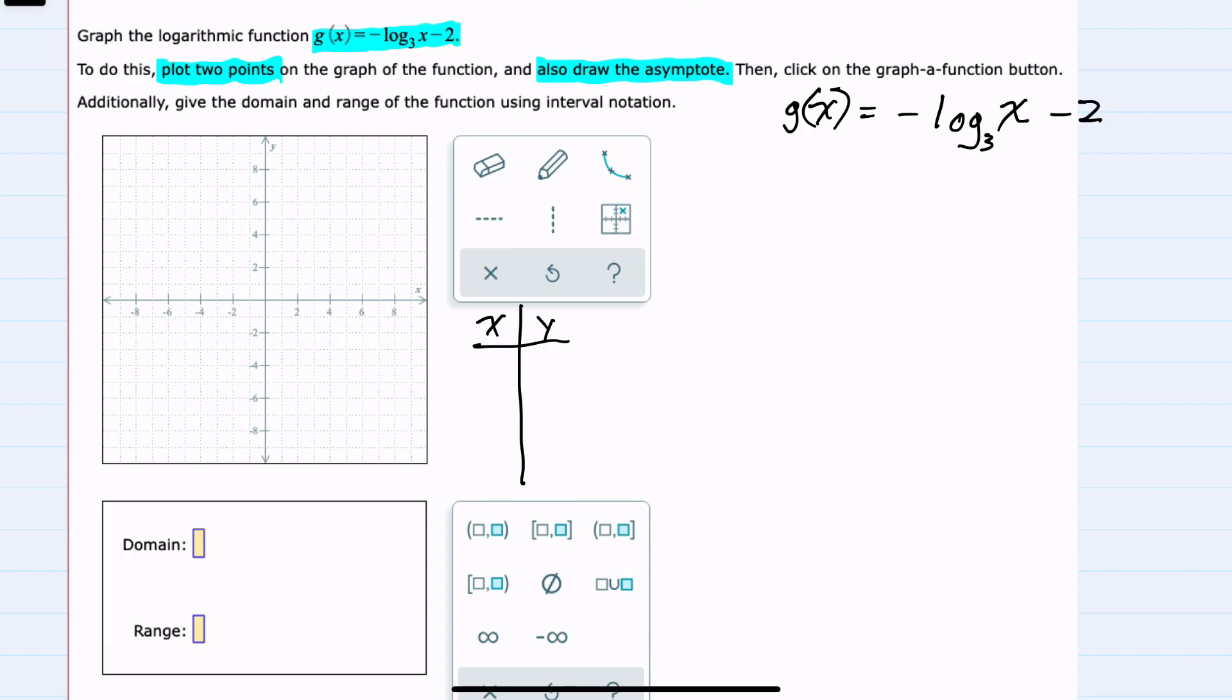For example, the log base 3 of 3 is easy to calculate, so I will substitute in x equals 3, giving us the negative log base 3 of 3 minus 2. The log base 3 of 3 is asking the question: the 3 in the bottom should be raised to what power to get the 3 that we're taking the log of.